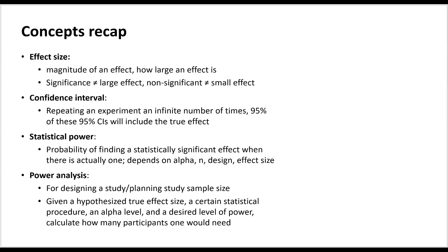Confidence interval is a very tricky concept many people get wrong. Imagine we do an experiment where we compare an experimental group and a control group, and we get an effect size estimate. Then around this effect size estimate, we construct an interval to indicate how uncertain we are about this estimate. Now imagine we repeat this experiment an infinite number of times and get an infinite number of effect size estimates and confidence intervals. If 95 percent of these confidence intervals contain or cover the true effect size, we call these 95 percent confidence intervals.